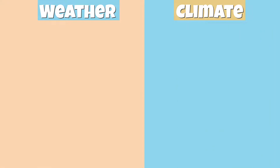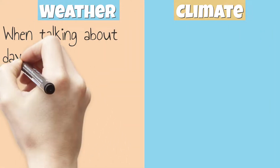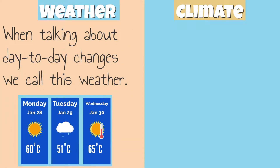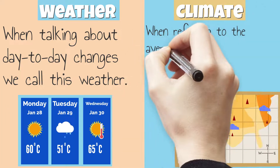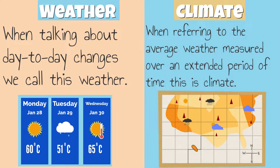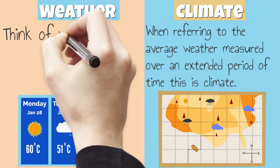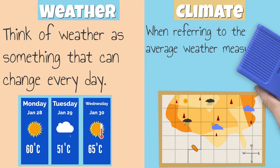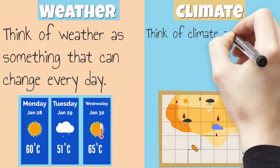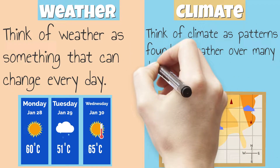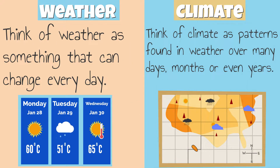So what is the difference between weather and climate? When talking about day-to-day changes, we call this weather. When referring to the average weather measured over an extended period of time, this is climate. Think of weather as something that can change every day, and think of climate as patterns found in weather over many days, months, or even years.